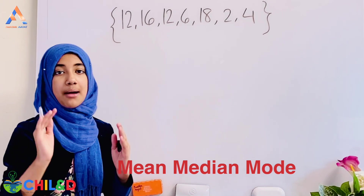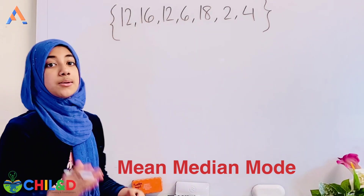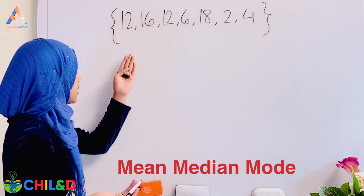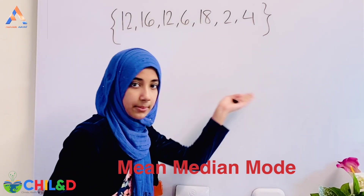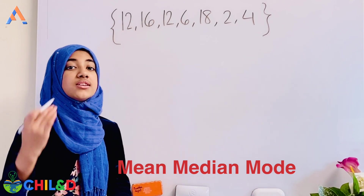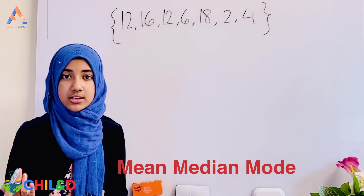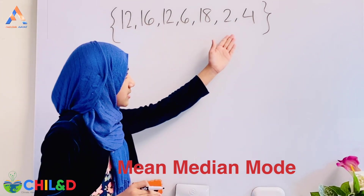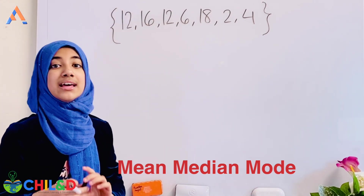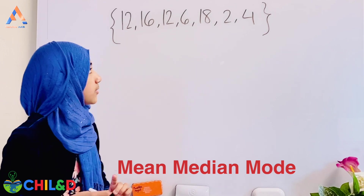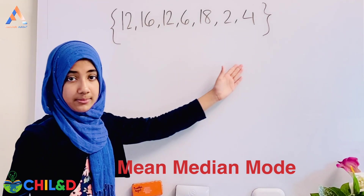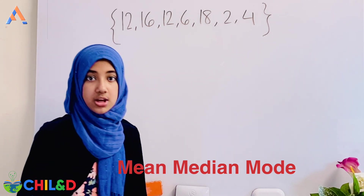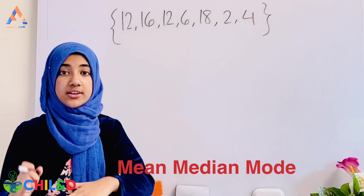First, I'm going to tell you about the mean. The mean is basically the arithmetic average, meaning we add all the numbers and divide by the count of numbers. We have 1, 2, 3, 4, 5, 6, 7 numbers, so we will divide by 7.